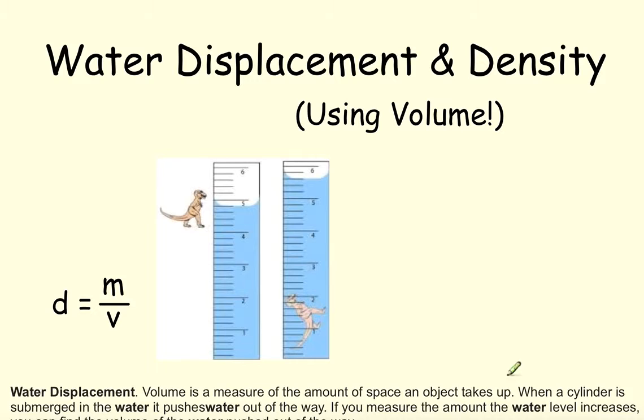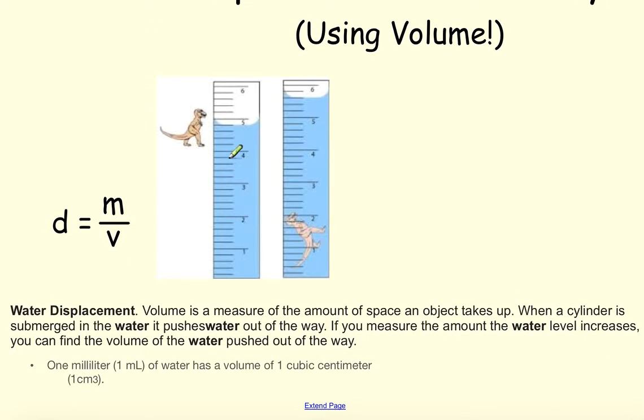Let's take a look at how this works for science. We're going to use water displacement to help us find the volume, and then that would help us find the density of an object. In this case, our object is the dinosaur. Water displacement, down low, I have some information. The volume is a measure of the amount of space an object takes up, which is what we were just calculating back there.